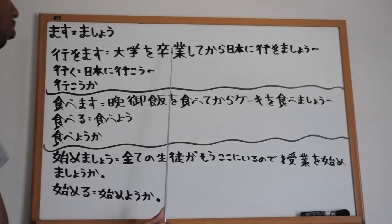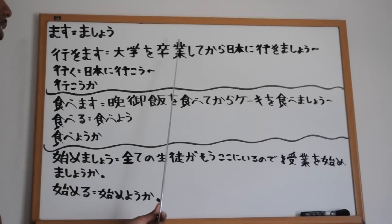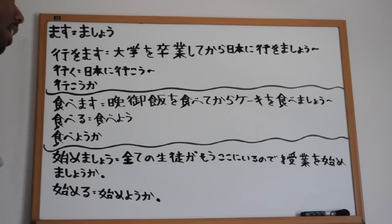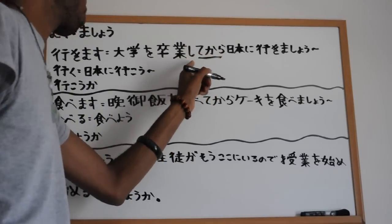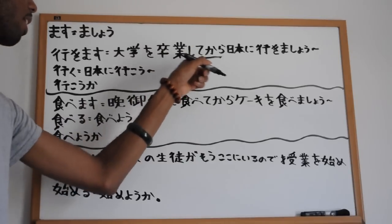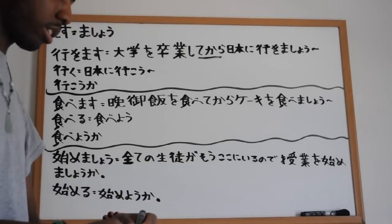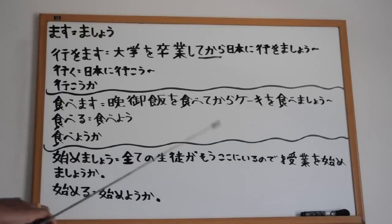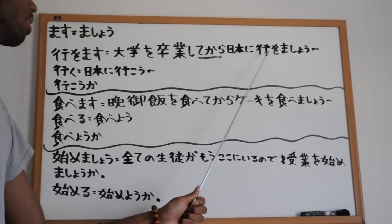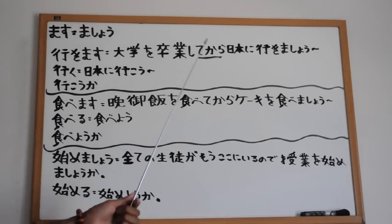Daigaku is college. Sotsugyo by itself means graduation or ceremony, but when you have suru after that, it turns into a verb meaning to graduate. Shite kara - we talked about te kara before. Te kara means after, after something happens. In this case, after you graduate. So sotsugyo shite kara - put suru in te form, then kara means after. So sotsugyo shite kara nihon ni ikimashou - nihon ni, in the direction of Japan, ikimashou, let's go. After we graduate from college, let's go to Japan.